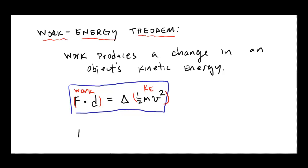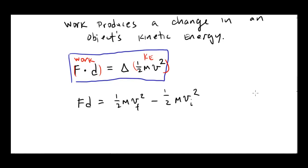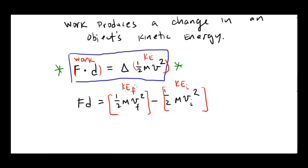We can expand this further: F times D equals one-half mv_final squared minus one-half mv_initial squared. The right side represents the change in kinetic energy — final kinetic energy minus initial kinetic energy. This is the full work-energy theorem equation, and we're going to use it a lot in this unit.